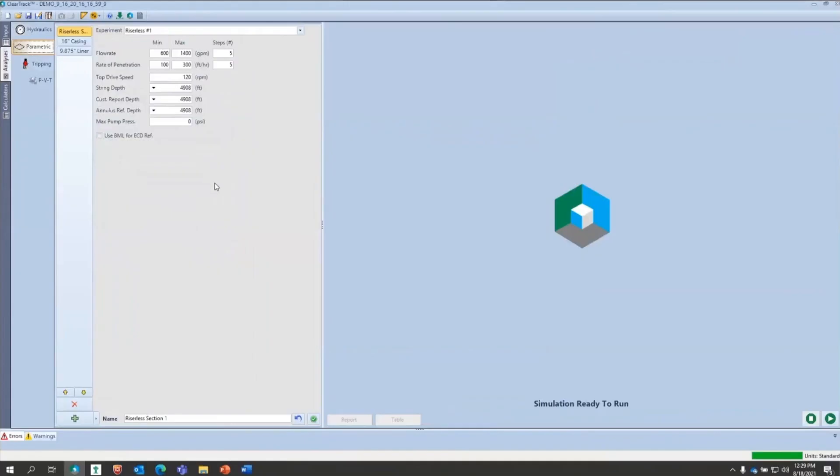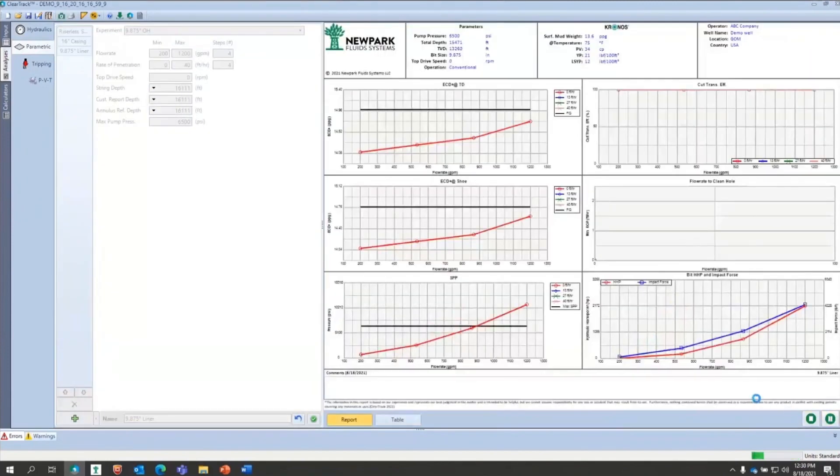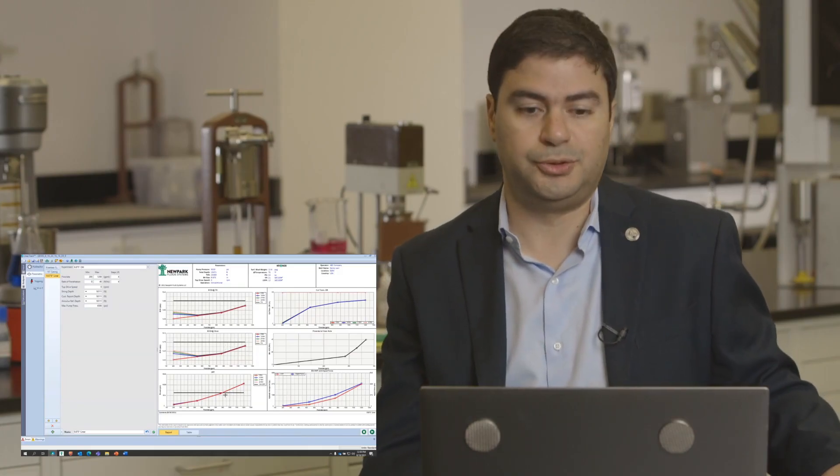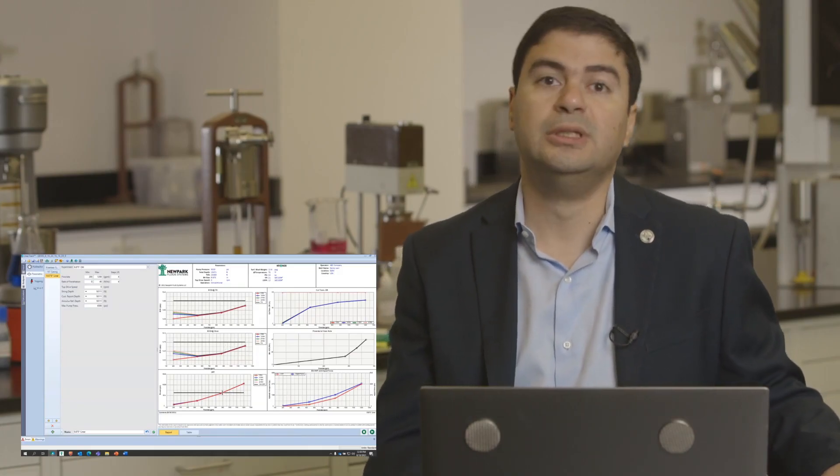One other feature of the software is what we call parametric analysis. In there, you're able to put a set of parameters that you would use for drilling, like a wide range of parameters. From there, you can let the software help you optimize what is the optimum parameters as far as flow rate, drilling rate, and RPMs of the drill string itself to help clean the hole, stay within that pressure window, and not exceed a certain pump pressure.